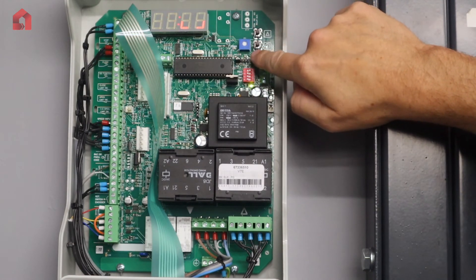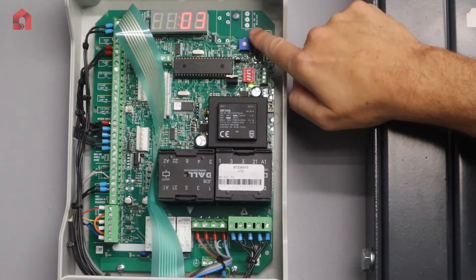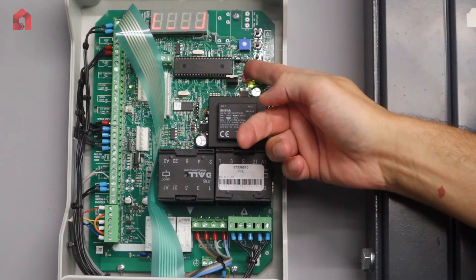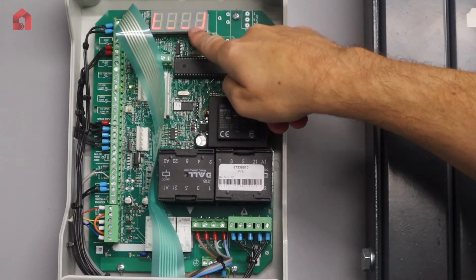Again, if you want to scroll through any more of the parameters, you can do. If not, just flick dip switch one off to come out, and now it's showing on its bottom limit.